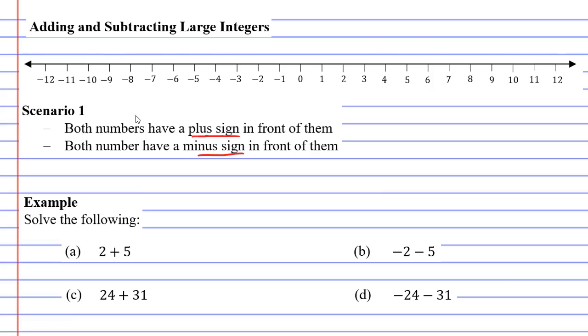We'll look at questions A and B in the example. Question A has a plus sign in front of the five and in front of the two is a hidden plus sign. So that fulfills dot point one.